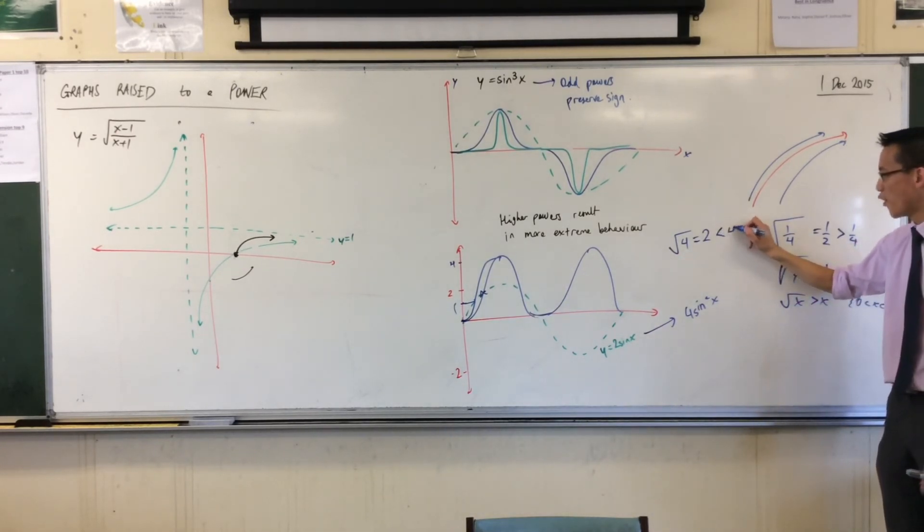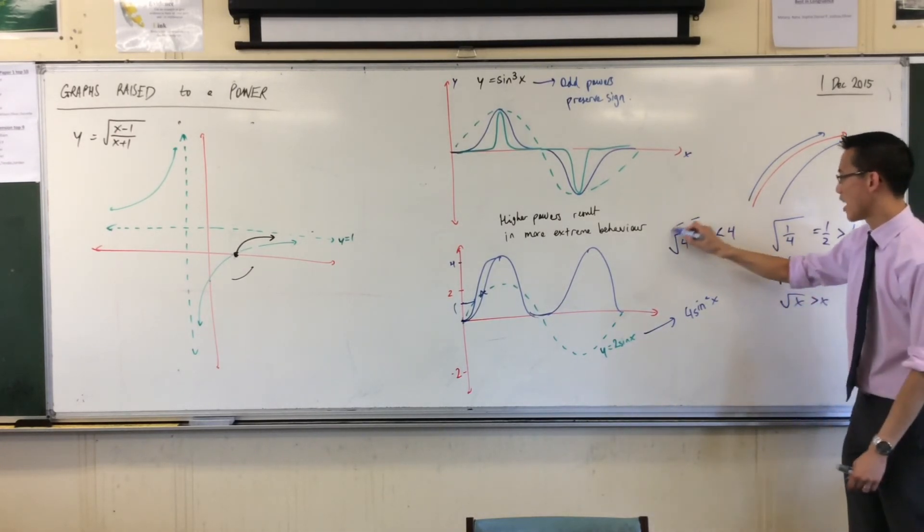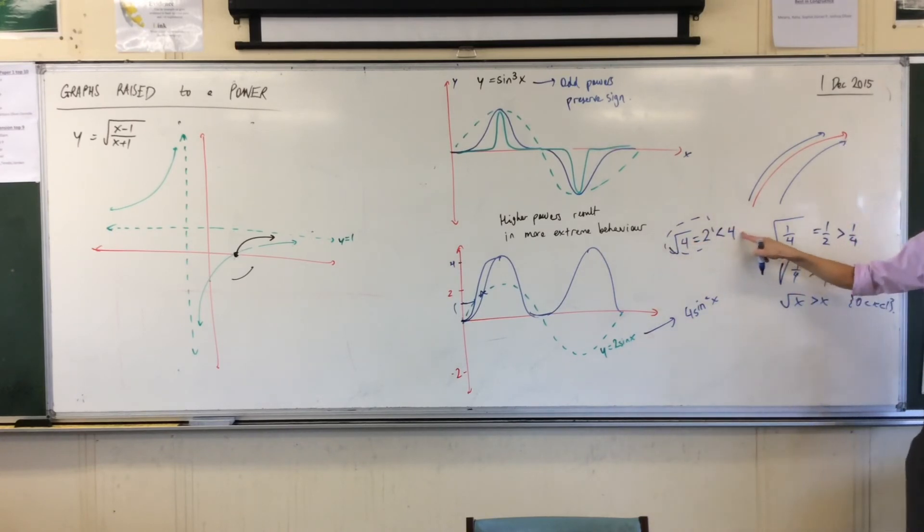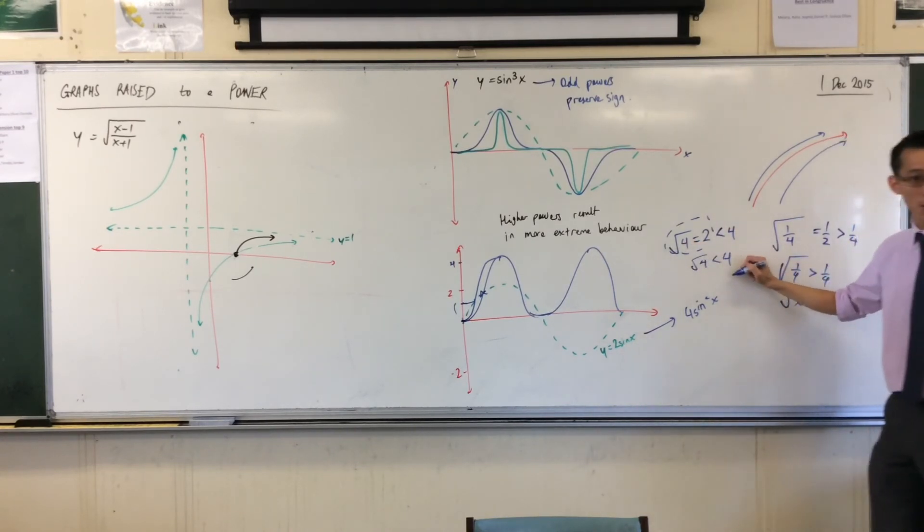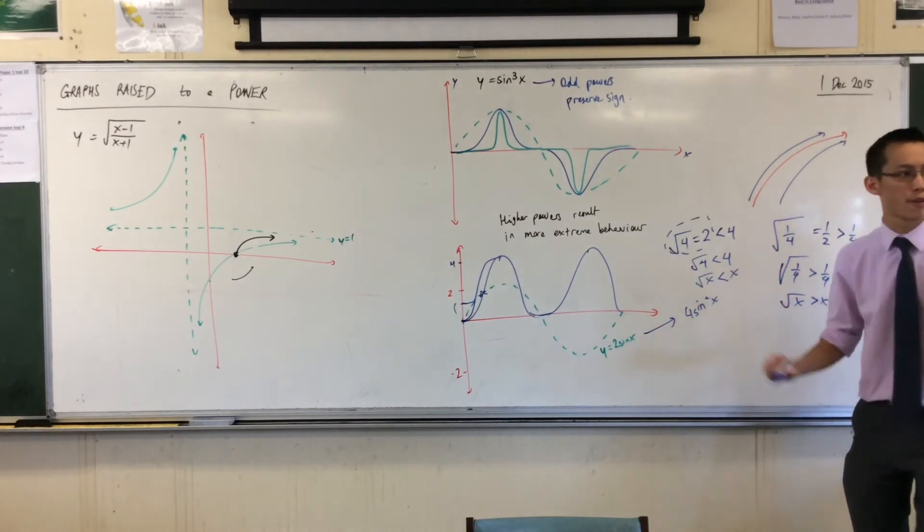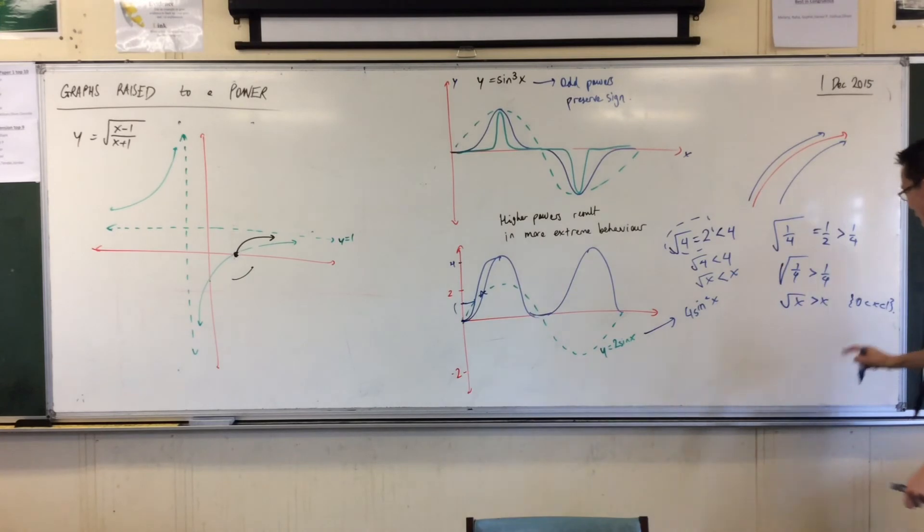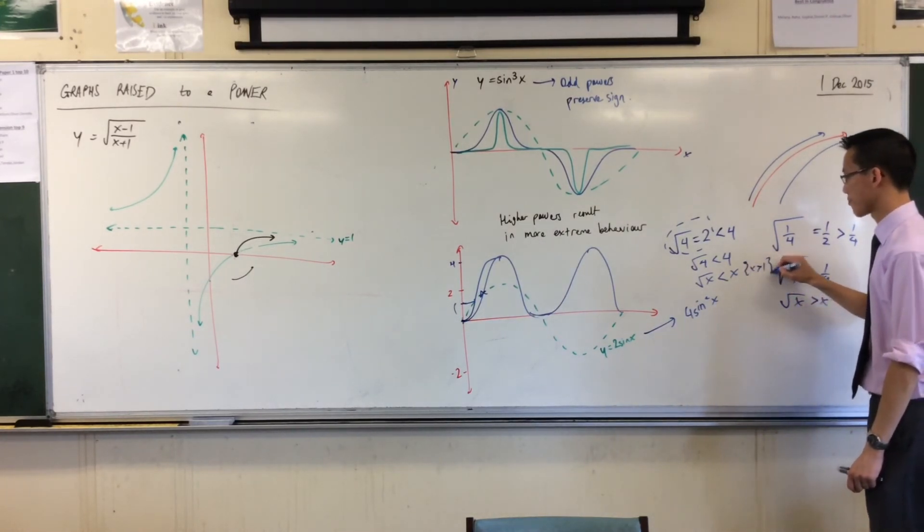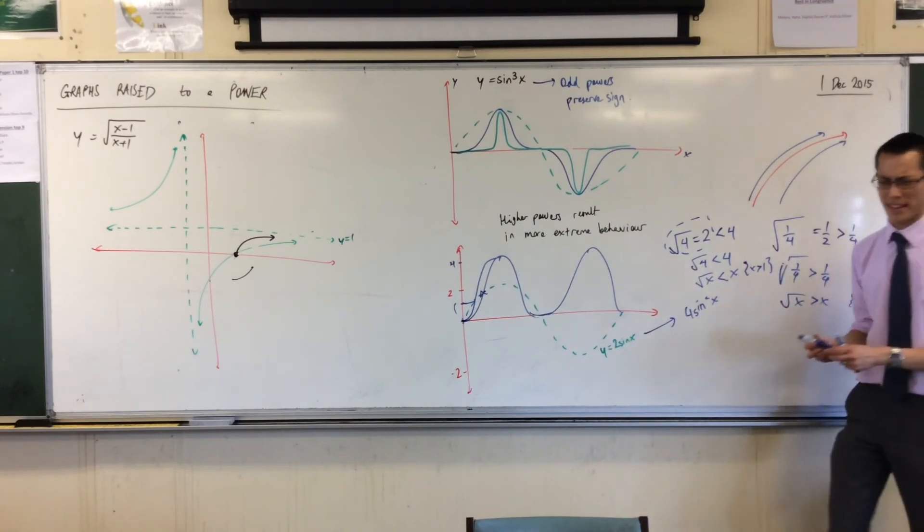2 is less than 4, right? Now, if these two guys are equal and they're both less than 4, then I conclude that the square root of 4 is less than 4. In other words, the square root of x is always less than x provided, rather than being in this kind of value, right? If x is bigger,